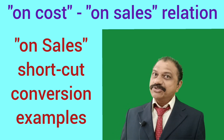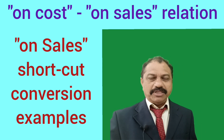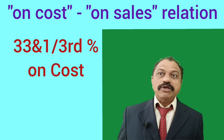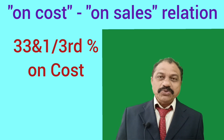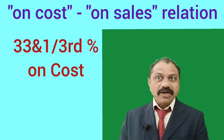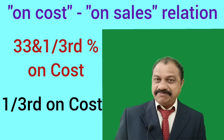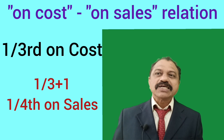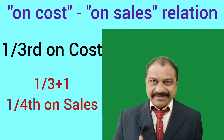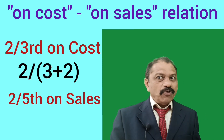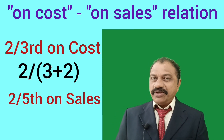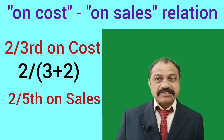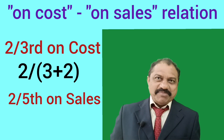Let's convert profit on cost to profit on sale using the shortcut method. Example 1: Rate of profit is 33 and one-third percent on cost. Profit equals Cost into 33⅓ divided by 100, which is one-third on cost. Applying the shortcut: 1/3 on cost equals 1 by (3+1) on sales, that is one-fourth on sales. Example 2: Rate of profit is 2/3 on cost. So 2/3 on cost equals 2 by (3+2) on sales, that is 2/5 on sales.